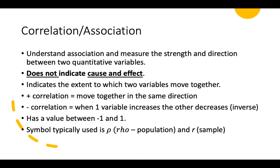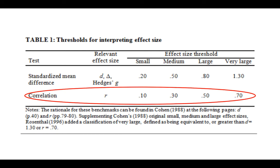Correlation has a value of between negative 1 and 1. The symbol typically used for correlation is rho for population and r for sample. This is the threshold for interpreting effect size for correlation. Effect size of 0.1 is considered small, medium is at least 0.30, a large effect size is 0.50, and a very large effect size is at 0.7. This is according to Cohen.